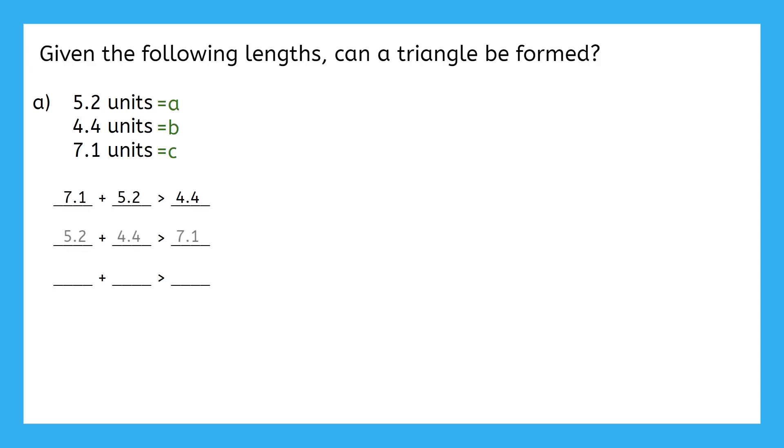If we place the lengths into our inequalities, we can see if they're true statements. And it doesn't matter which order you substituted your values in, you'll still get the same three statements as me. And look at that, these are all true statements. No matter which two side lengths we add together, the result was always greater than the third side. So we know that a triangle can be formed.